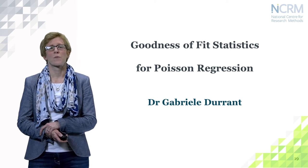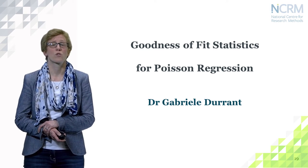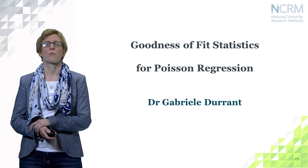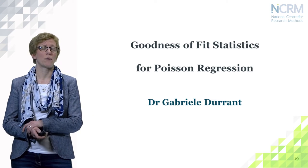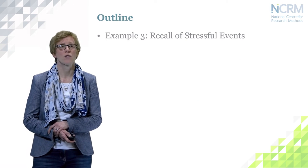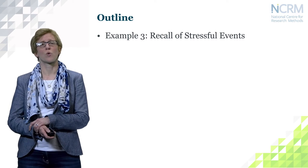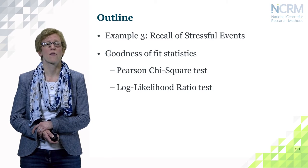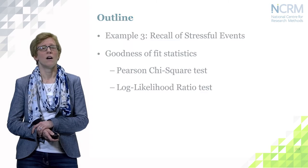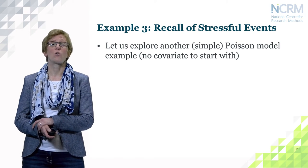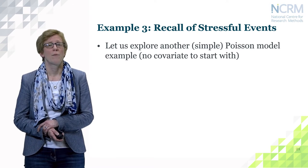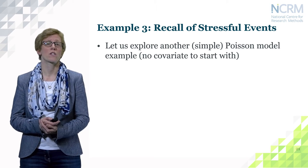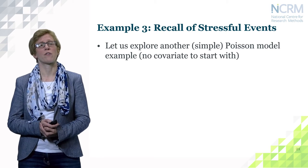We will now continue looking at a goodness of fit test statistic for Poisson regression. We would like to test if a particular model that we are assuming really does fit the data, or if we may want to extend our model and include more covariates. We will first look at another example, and then discuss the Pearson chi-square test and the log likelihood ratio test.